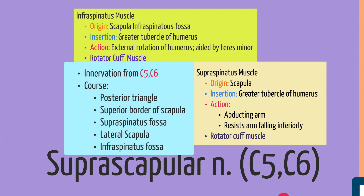The infraspinatus muscle originates on the infraspinatus fossa of the scapula and inserts into the greater tubercle of the humerus. The infraspinatus aids in the external rotation of the humerus with the help of teres minor, which is one of the other rotator cuff muscles.